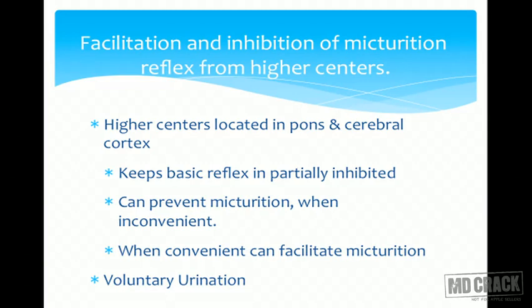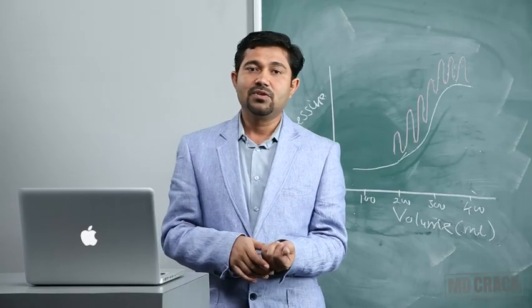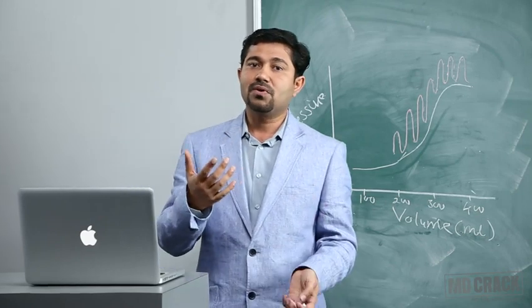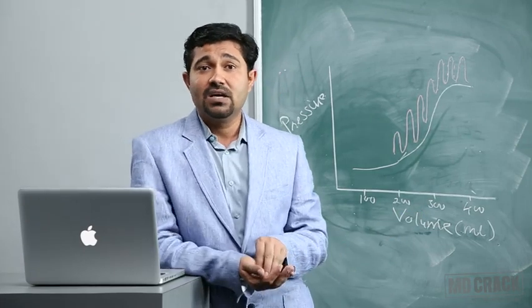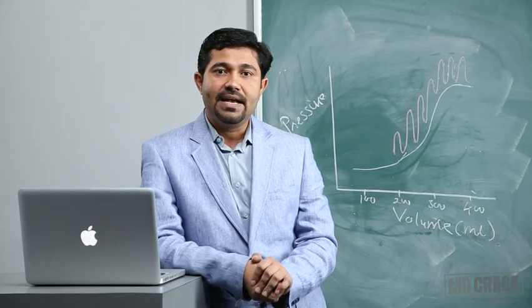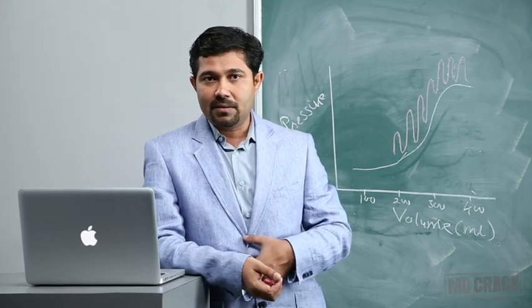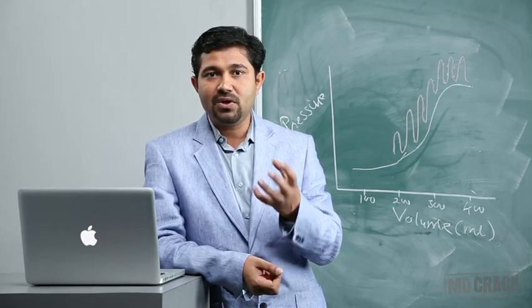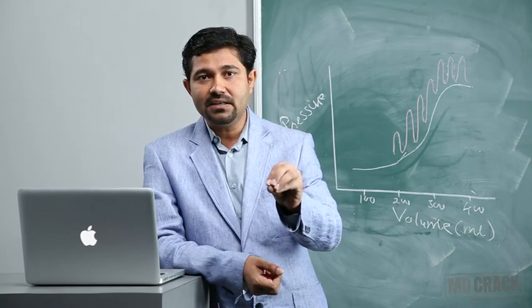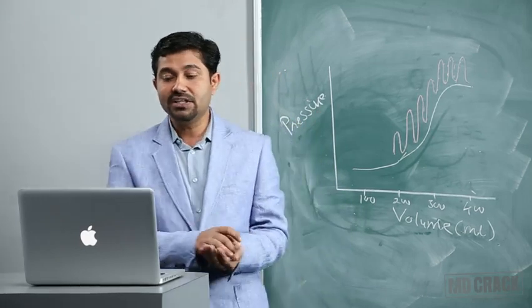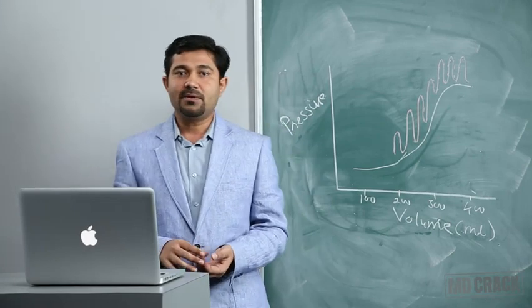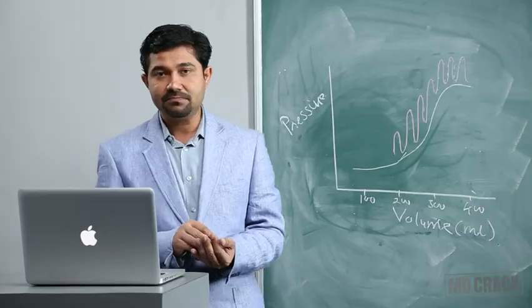The function of higher centers is to keep the basic reflex in a partially inhibited state — preventing micturition when inconvenient and facilitating it when convenient. For voluntary urination even when the bladder is not completely filled, the person compresses the abdominal muscles, increasing abdominal pressure, pushing urine into the neck of the bladder, and triggering the micturition reflex.